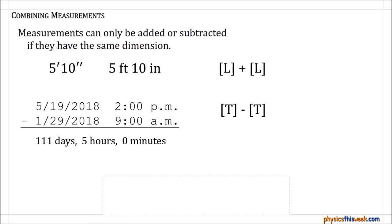But notice I've taken two time things and subtracted those, and each of those times was measured in months, days, years, hours, and minutes. And when I subtract them, I also get a unit or a dimension of time with mixed units of time.